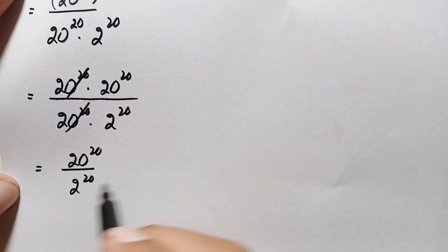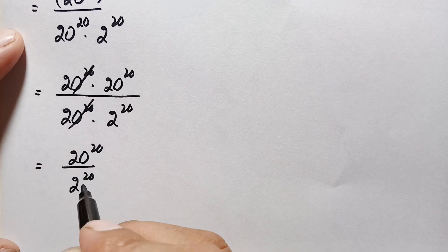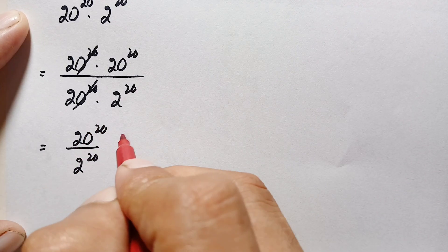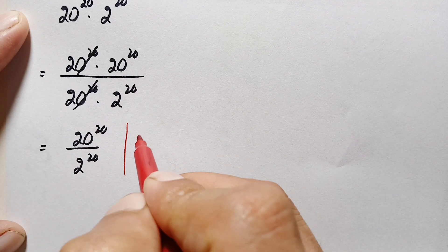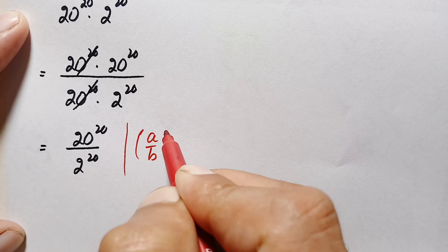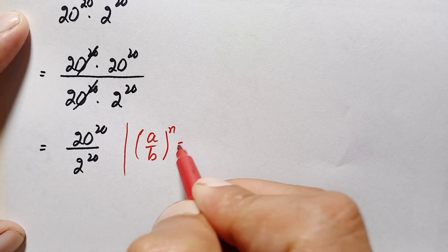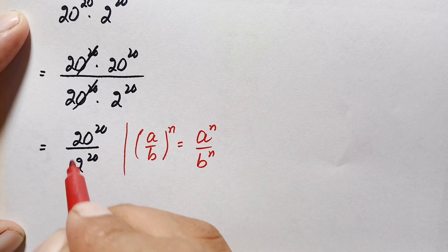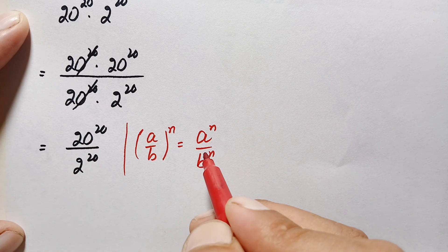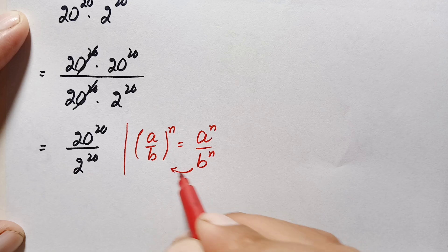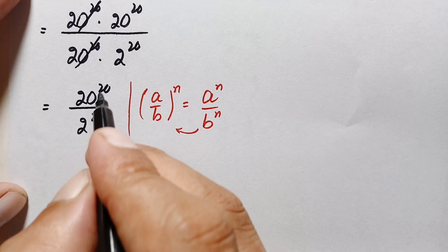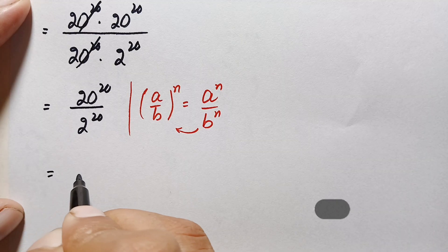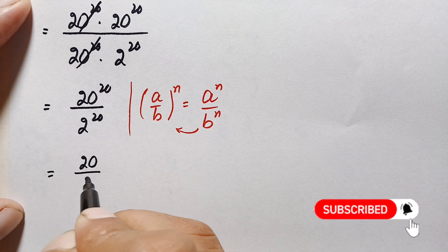Now these two numbers have the same power, so we use the same-power exponential identity: a divided by b, all raised to power n, equals a raised to power n divided by b raised to power n. The right-hand side is in that form, so we change it — we take out the power as common and divide the bases. This becomes 20 divided by 2, raised to power 20.